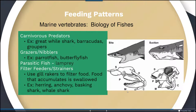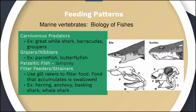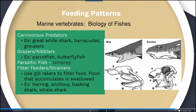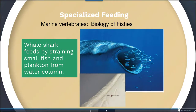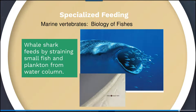Feeding patterns in fish are diverse. Carnivorous predators include great white sharks, barracudas, and groupers. Grazers and nibblers — such as parrot fish and butterfly fish — feed opportunistically. Parasitic fish like lampreys attach to another fish and consume its tissue and blood. Filter feeders or strainers use gill rakers to filter food, which accumulates and is then swallowed; examples include herring, anchovy, basking sharks, and whale sharks. Whale sharks strain small fish and plankton from the water column.